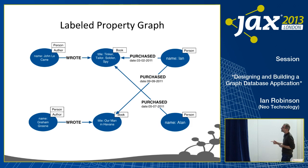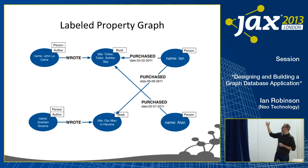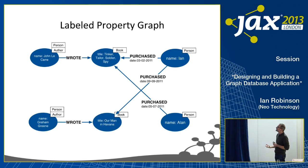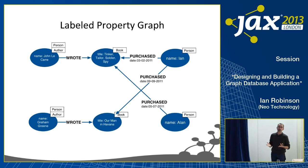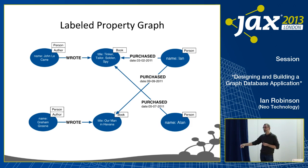Here's a simple example of a property graph model showing a couple of authors and the books they've written, and a couple of people who've purchased and likely read those books. We use nodes — the big blue blobs — to represent the things in our domain. Every node is a container for a set of properties, a set of key-value pairs. No two nodes need share exactly the same set of properties; even nodes representing ostensibly the same kind of thing can have different sets of properties, providing a lot of support for variable structure.